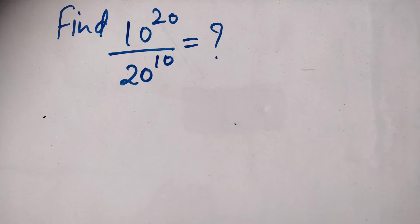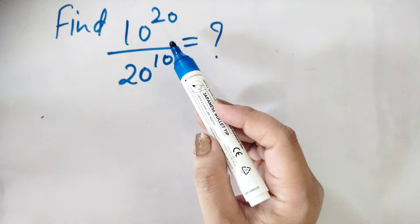Hello everyone, welcome to my YouTube channel and today we are going to another question of Olympiad. In which 10 raised to the power 20 upon 20 raised to the power 10, we have to find the value of this exponent's numbers.